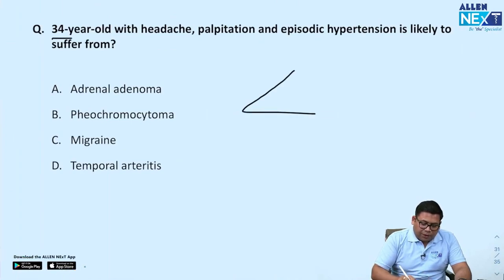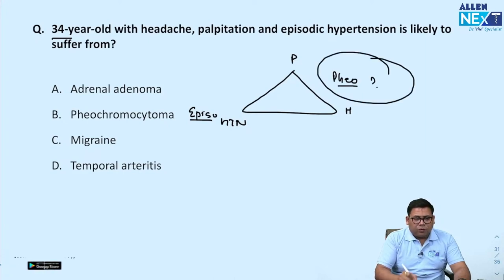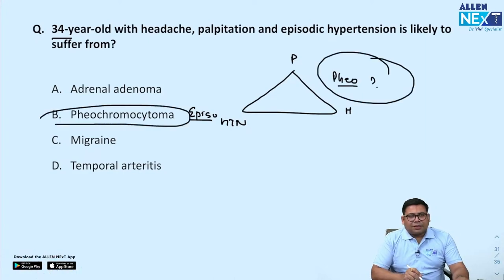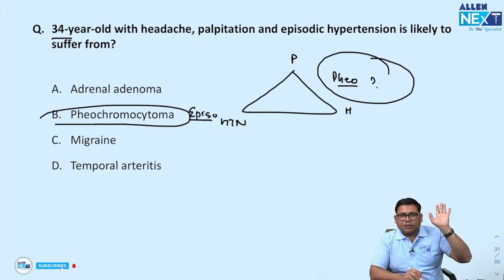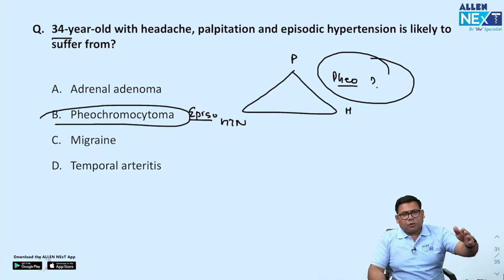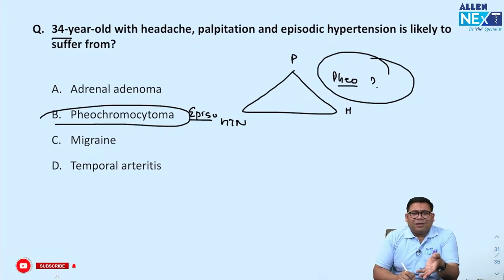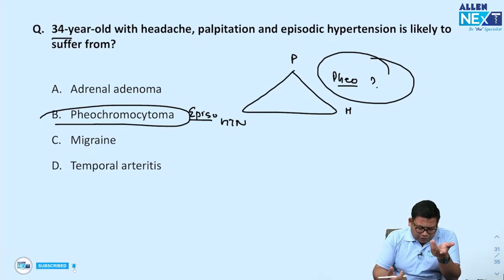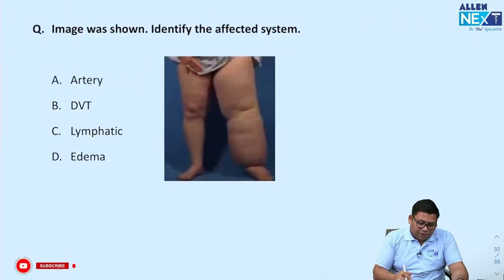34-year-old with palpitations, headache, diaphoresis, and episodic hypertension — this is suspected phaeochromocytoma. The classical triad for pheo is palpitations, headache, and diaphoresis with episodic hypertension. First go for urine assessment and plasma metanephrines, then confirmatory test with 24-hour urine metanephrines. Adrenal adenoma is mostly non-functional. In migraine, episodic hypertension is not typically related. Answer is B — phaeochromocytoma.